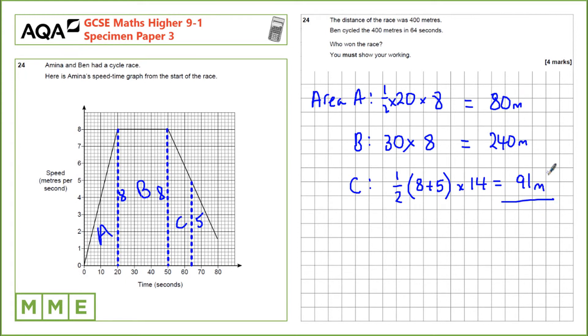The final thing we need to do is add these three up. And that gives a total of 411 metres. So because she cycled a longer distance in the same time, 64 seconds, she must have won. So Amina wins the race.